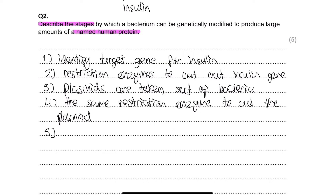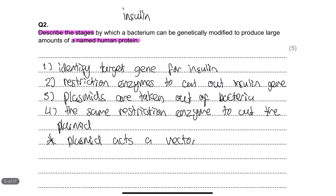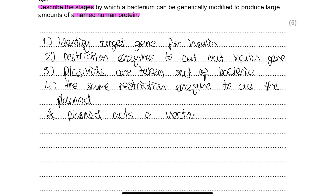At this point, it's important to include that the plasmid acts as a vector — this knowledge gets you a mark and shows understanding. A vector in biology is an organism that acts as a vehicle to transfer genetic material from a donor organism (in this case, the human donating the insulin gene) to a target organism (in this case, a bacterium). Once transferred via the vector, the gene is expressed and proteins are produced at large scale.